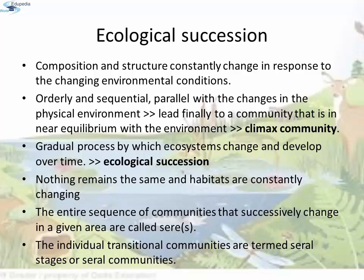Ecological Succession: An important characteristic of all communities is that composition and structure constantly change in response to the changing environmental conditions. This change is orderly and sequential, parallel with the changes in the physical environment. These changes lead finally to a community that is in near equilibrium with the environment, called a climax community. Ecological Succession is the gradual process by which the ecosystem changes and develops over time.